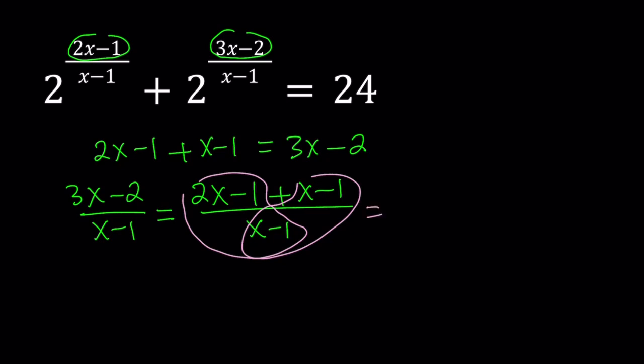Like this and like that, right? And x minus 1 over x minus 1 is 1. So we can write this as 2x minus 1 over x minus 1 plus x minus 1 over x minus 1, which is equal to 1. Great. So I was able to express 3x minus 2 over x minus 1 in terms of 2x minus 1 over x minus 1. The difference is 1. So we can go ahead and substitute this in our equation.